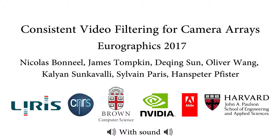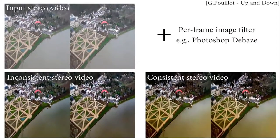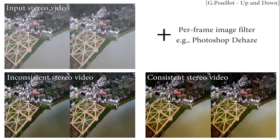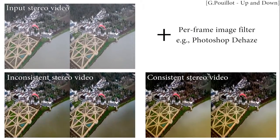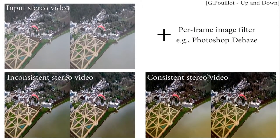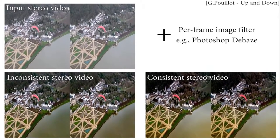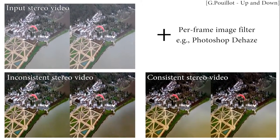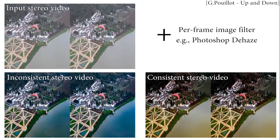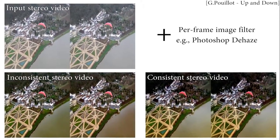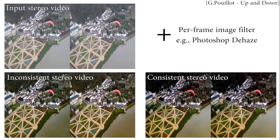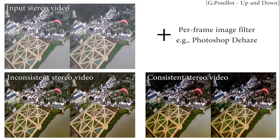Consistent video filtering for camera arrays. Given an input video camera array, like a stereo pair or light field, and an image filtering algorithm, we turn per-frame and per-view temporally and spatially inconsistent video into consistent video.